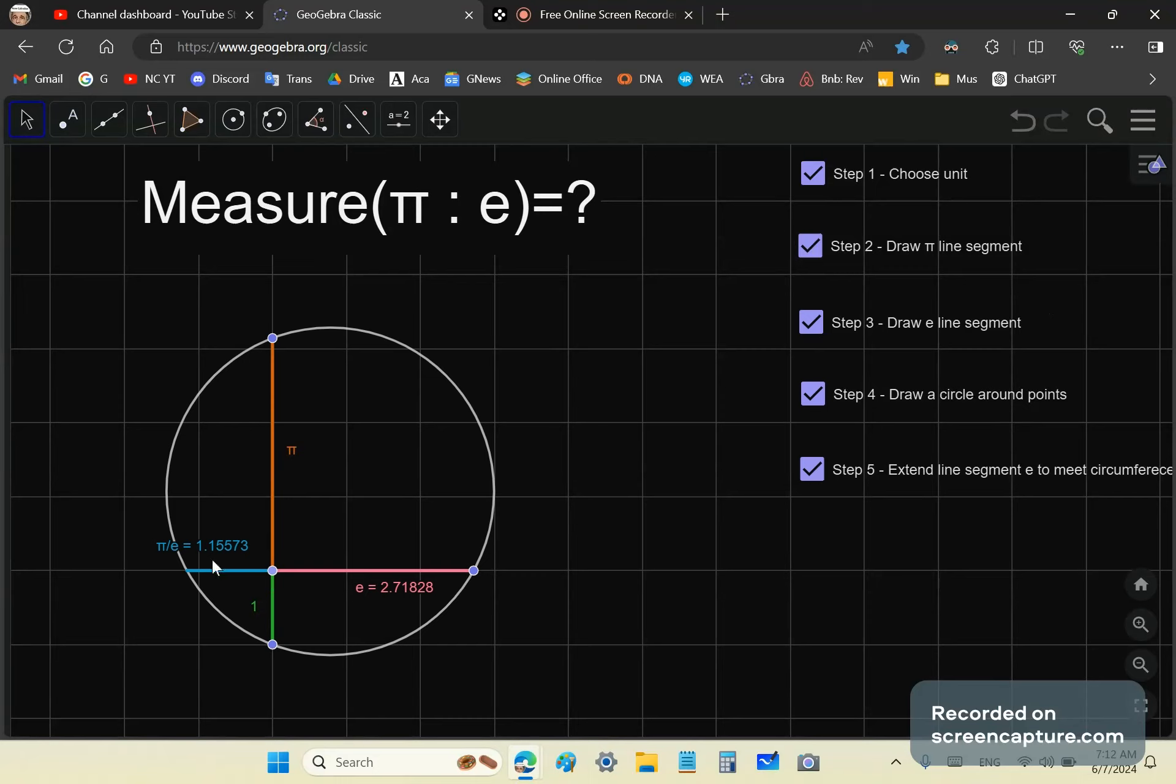And there you have it. Pi divided by E is approximately this value here. In geometry, we don't care about the numbers, but that would be the exact quotient. There's no error there. This little sign line is the result of pi measured by E or pi divided by E.